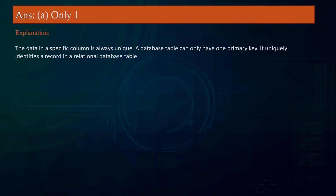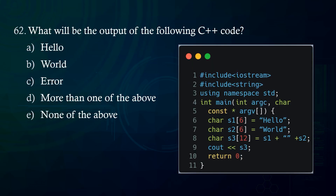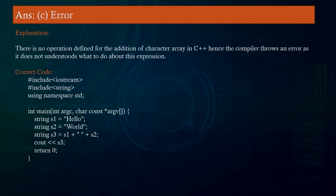What will be the output of the following C code? A. Hello B. World C. Error D. More than one of the above E. None of the above. Answer: Error. Explanation: There is no operation defined for the addition of character arrays in C. Hence the compiler throws an error as it does not understand what to do with this expression.